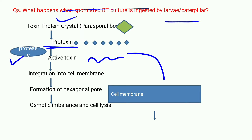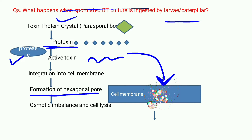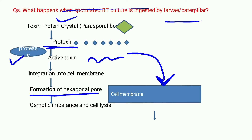This active toxin then integrates into the gut epithelium cell membrane of the larvae. As soon as integration takes place, there is formation of a hexagonal pore. Because of the pore formation, there is an instant osmotic imbalance leading to the influx of water and cations, and many ATPs are lost.